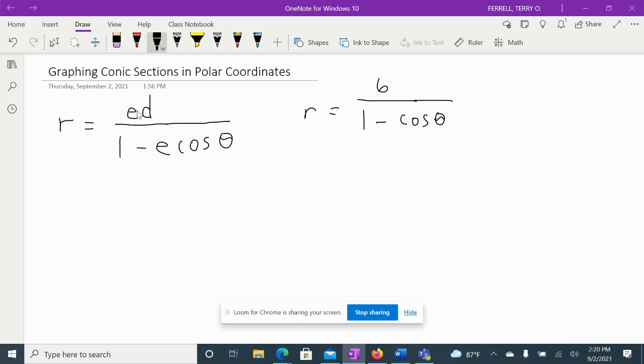E represents eccentricity. This is just cosine of theta. And if I graph this equation and pull the coordinates, which I'm going to show you how to do, it'll hopefully make more sense.